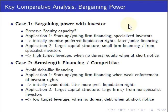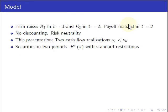Let me briefly sketch the model. I'll be very brief because I'm not going to force any formulas here; I'm just going to do a lot of hand-waving trying to convey the main intuition. We're thinking about a firm that raises capital in two periods — period 1 and period 2 — to invest in a project whose payoffs are realized in the final period, period 3. There is no discounting, everybody is risk-neutral.